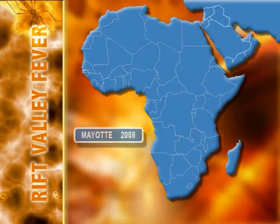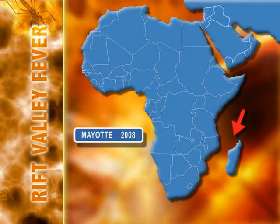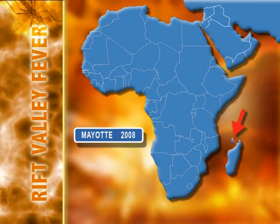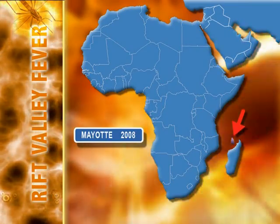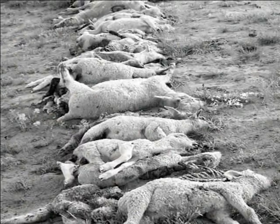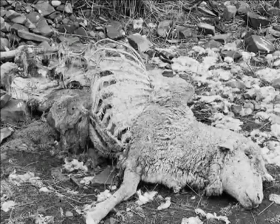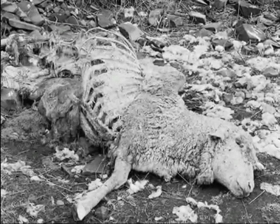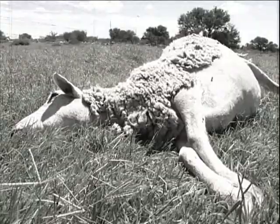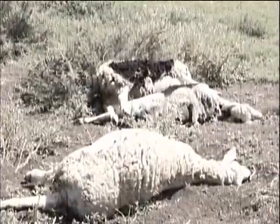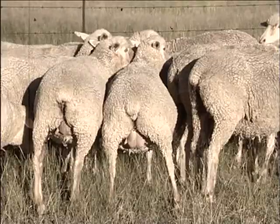During 2008, it was detected on the French island of Mayotte in the archipelago of Comoros, located between Mozambique and Madagascar. The disease was first recorded in southern Africa late in 1950, when an estimated 100,000 sheep died and 500,000 ewes aborted in South Africa alone.